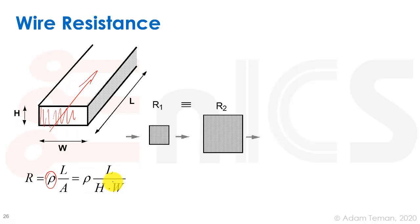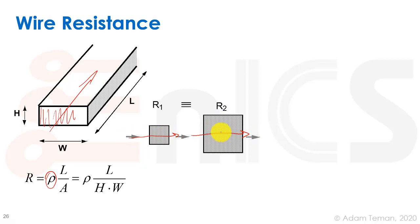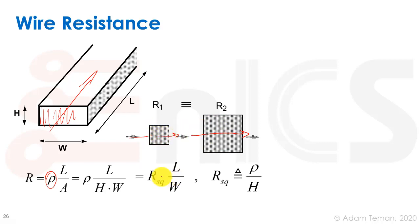Interestingly, if we look at two different resistors — one where the current goes this way, and a second, much bigger conductor — the resistance is exactly the same. That's due to this ratio relationship. In fact, a square always has the same resistance, which we call R-square.